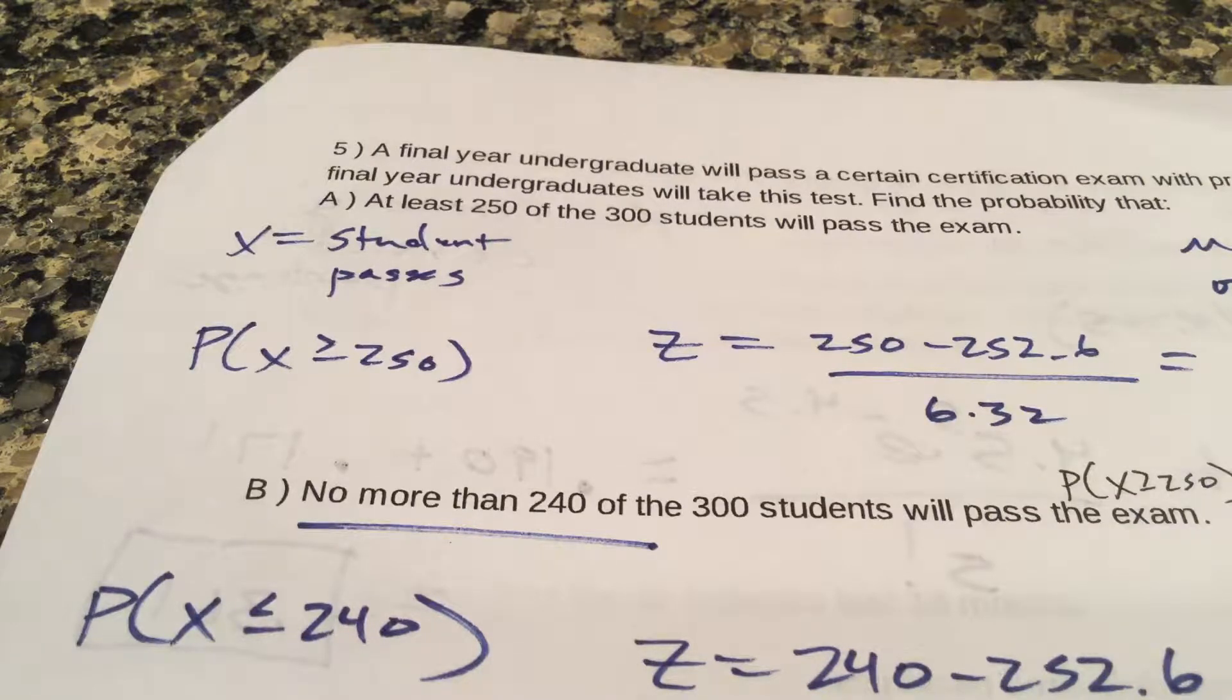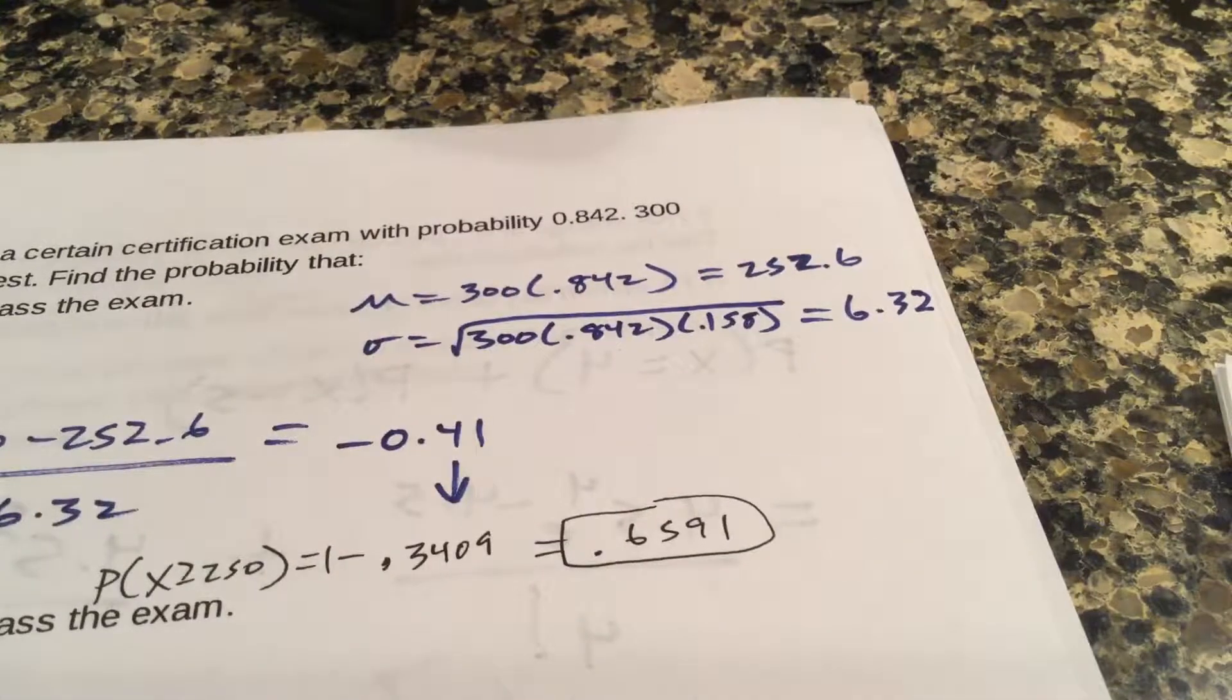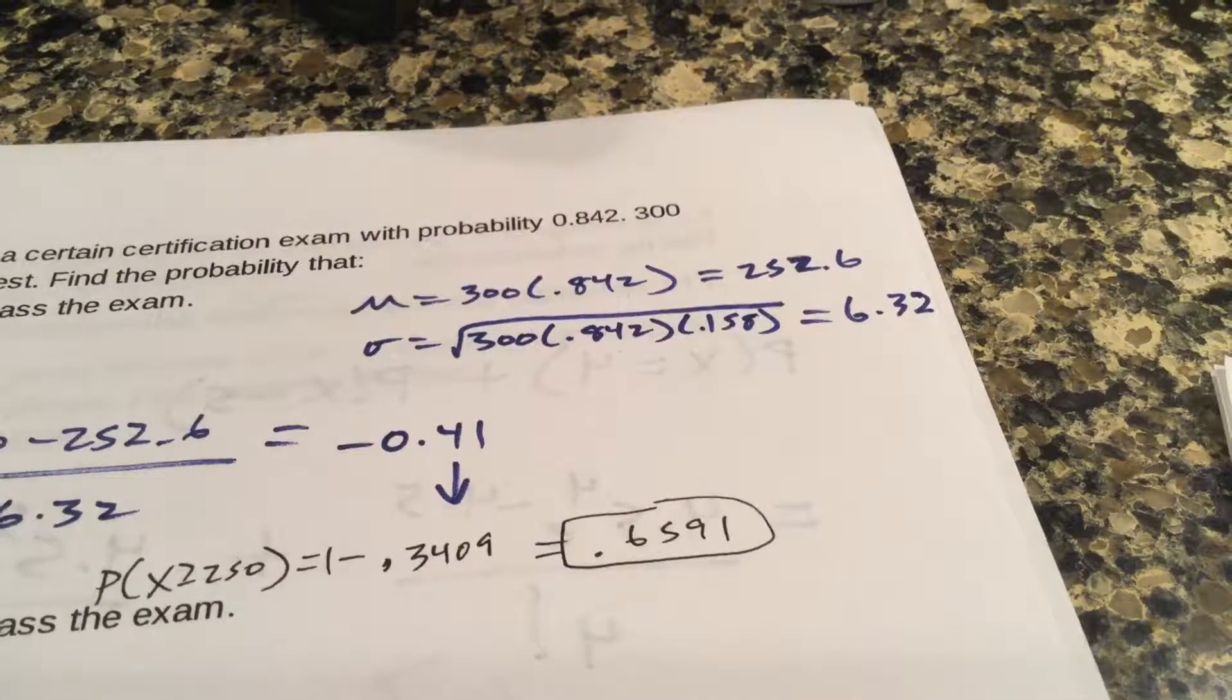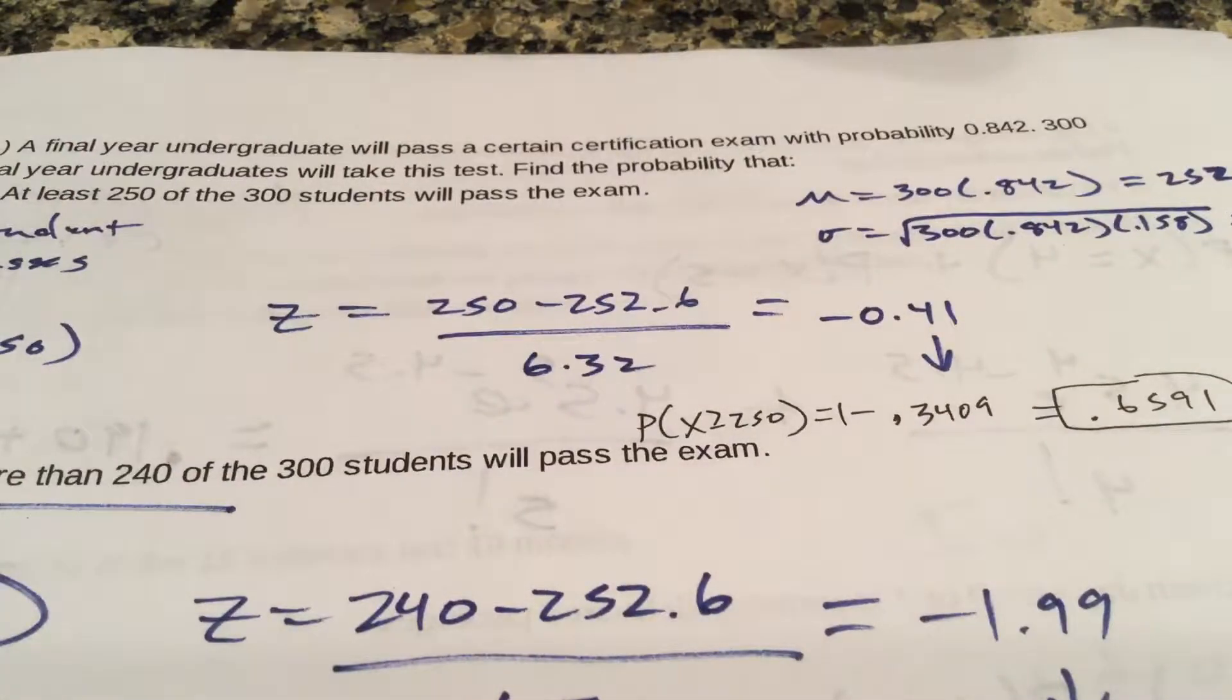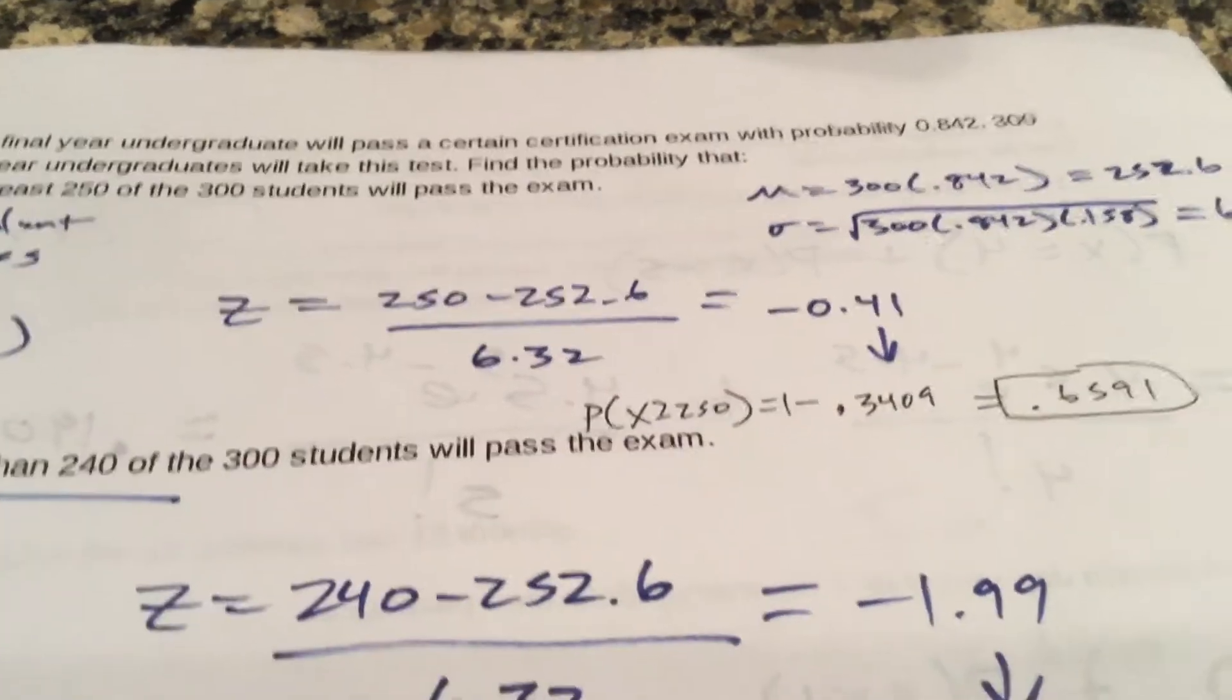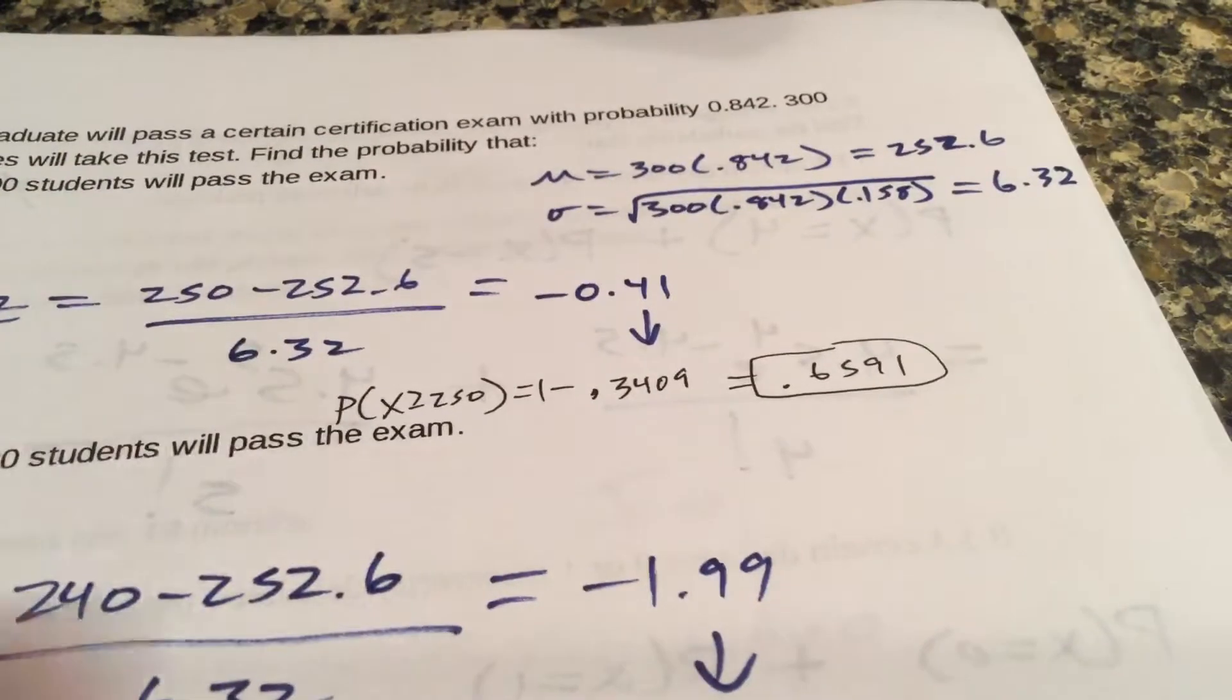So that's when you have to do the approximation. Find the mean, the standard deviation like that. Then I want to know x equals students passes, at least is greater than or equal to 250. So find your z-score, greater than or equal to, when you find that area subtracted from one, there it is.